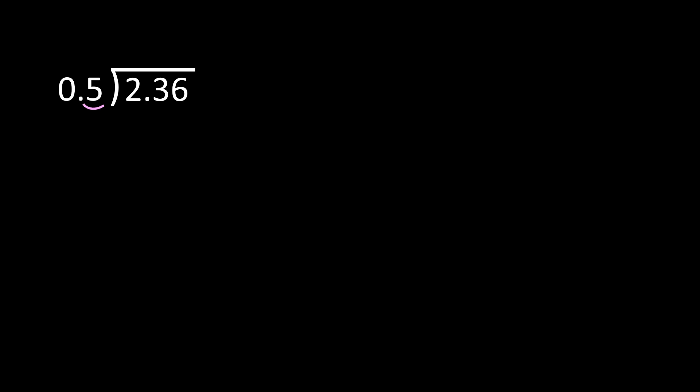In this example, we have 2 and 36 hundredths divided by 5 tenths. The first thing we need to look at is our divisor. We have 5 tenths, and you can't have a decimal number in that divisor — it has to be a whole number. So we're going to take the decimal in 5 tenths and move it one place to the right, so our 5 tenths will now be a whole number.